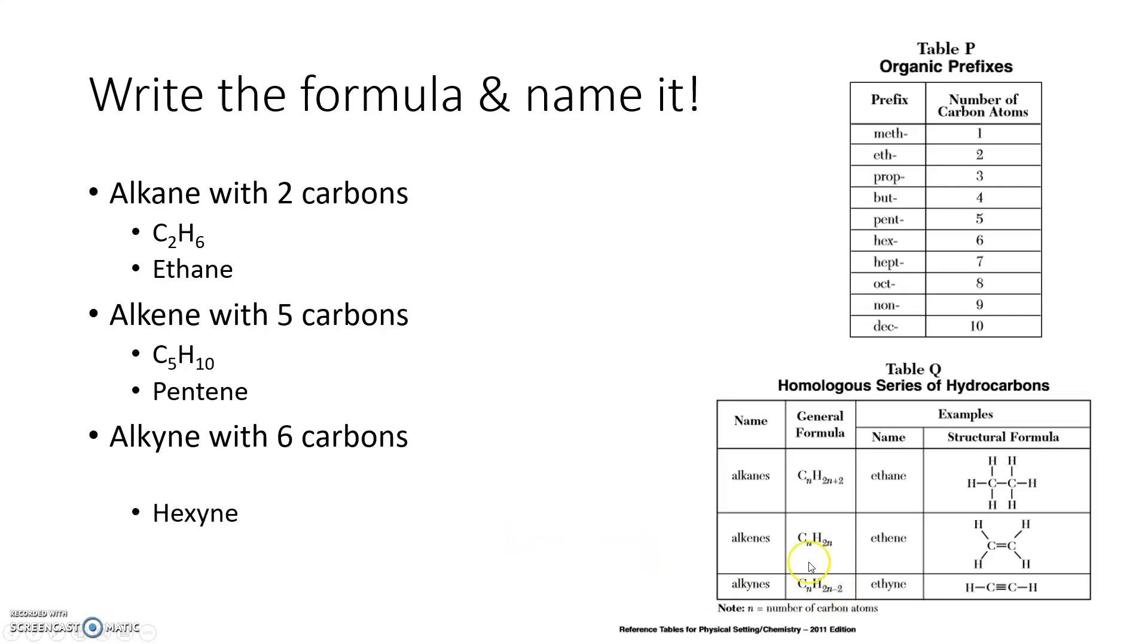I'm going to use this general formula, plugging in the n of six, because n always tells me the number of carbons. You can see that right down here on table Q. So plug in six right here for C6H2 times six, which is 12, minus two, which is 10, a little bit of math here. And you're going to end up with C6H10 for your alkyne called hexyne.